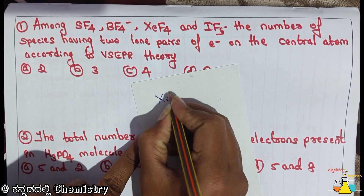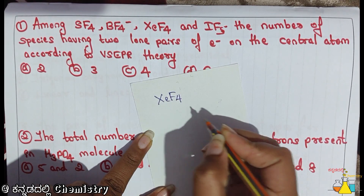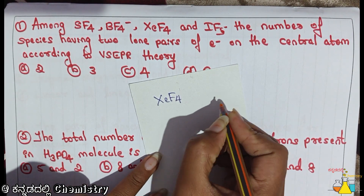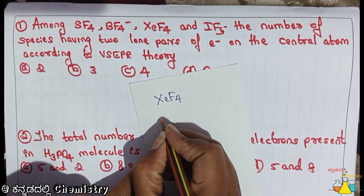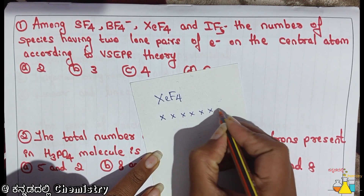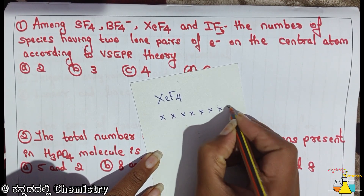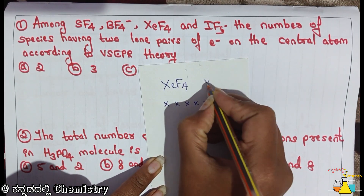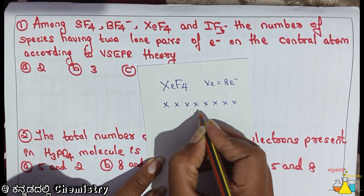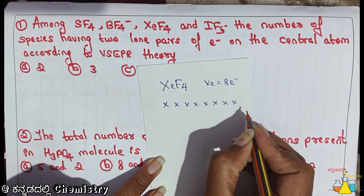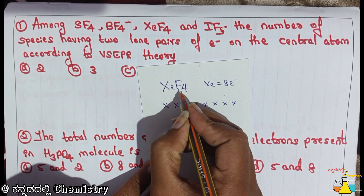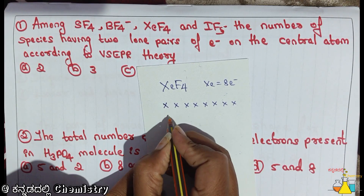For example, XE has 4. Xenon has 8 electrons. So, 1, 2, 3, 4, 5, 6, 7, 8. Xenon is 8 electrons, and 8 electrons will represent the XE. So, 8 electrons will represent the XE.